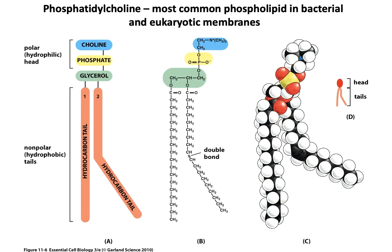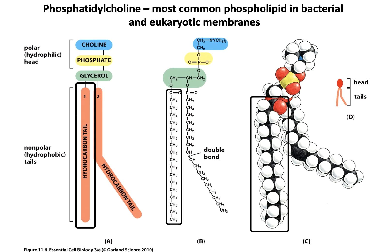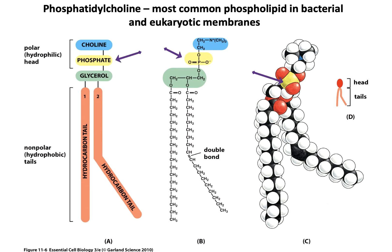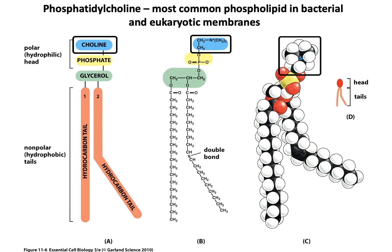Most membrane types consist of phosphatidylcholine, most common in bacterial and eukaryotic membranes. There's a long straight saturated hydrocarbon tail, another one that usually has at least one double bond which forms a kink in that chain. Those are connected by a glycerol molecule, a three-carbon alcohol, and then one of those is attached to the phosphate, and then another molecule — in this case, a choline.